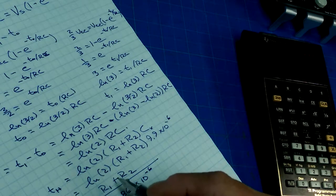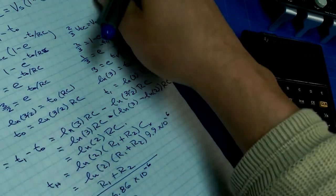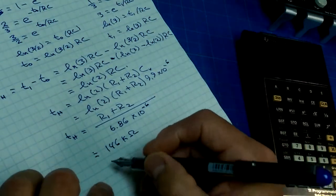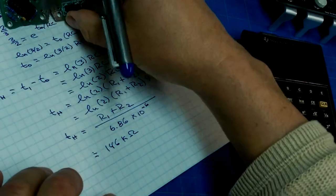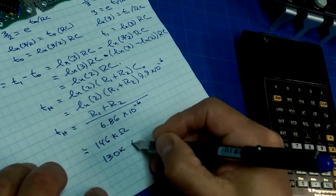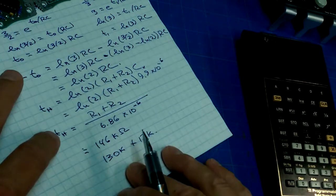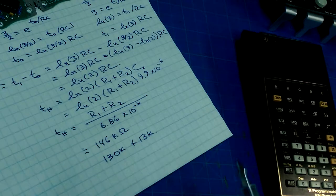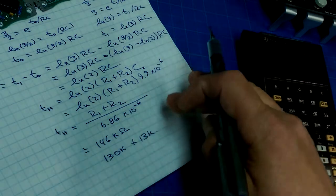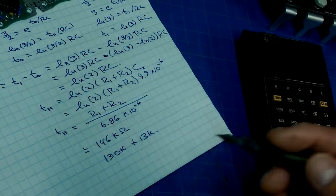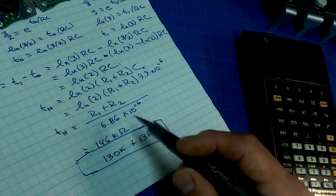We should choose R1 and R2 to make it easy to get these values. The ones chosen in the Boldport kit are 130k plus 13k, which is 143k. That's slightly under 1 second because 143k is a little larger, meaning the time will be a little smaller — and that's how they came up with those values.